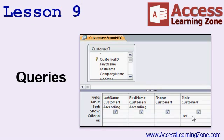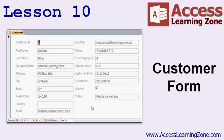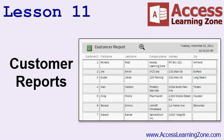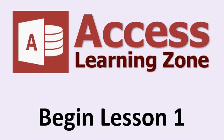In lesson nine, we're going to learn how to build queries, which allow us to see the data in tables in different ways. We'll learn how to sort on multiple fields and apply criteria to our queries. In lesson ten, we're going to build a customer form so we can present our end user with a nice friendly interface for working with data. In lesson eleven, we'll build a couple of different customer reports, including mailing labels. Now we're ready to get started, so click on the link to begin lesson one now.